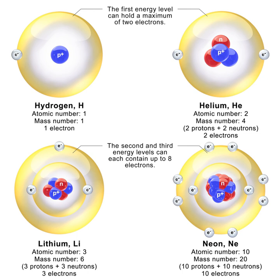Protons and neutrons behave almost identically under the influence of the nuclear force within the nucleus. The concept of isospin, in which the proton and neutron are viewed as two quantum states of the same particle, is used to model the interactions of nucleons by the nuclear or weak forces. Because of the strength of the nuclear force at short distances, the binding energy of nucleons is more than seven orders of magnitude larger than the electromagnetic energy binding electrons in atoms.